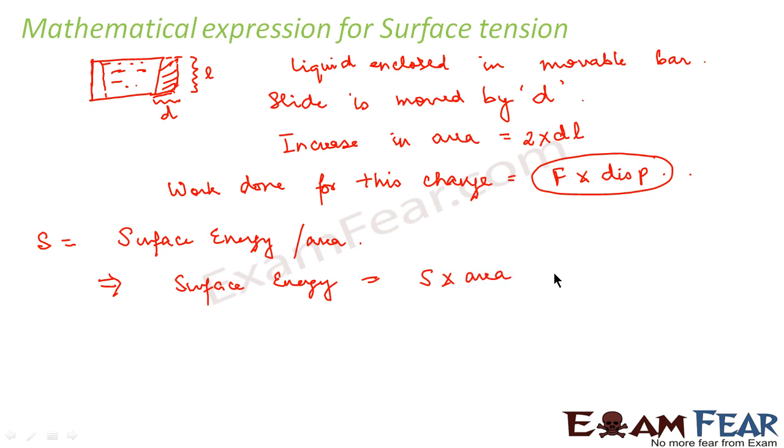So what would be the area? Area is nothing but 2 into DL because this is the increase in area. Therefore, we can say that this surface energy is equal to the work done which is associated with this change. So both of these should be equal.